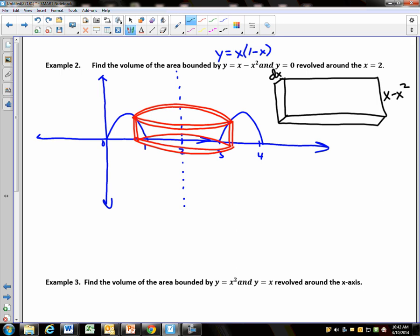Now this is really important that you understand this. If I chose this point, say 1 half, what's the radius? 2 minus 1 half, or 1 and a half, right? So you can't just say that x is your radius. It's always the right minus the left. It doesn't matter what's inside or outside. What matters is what's on the right and what's on the left.